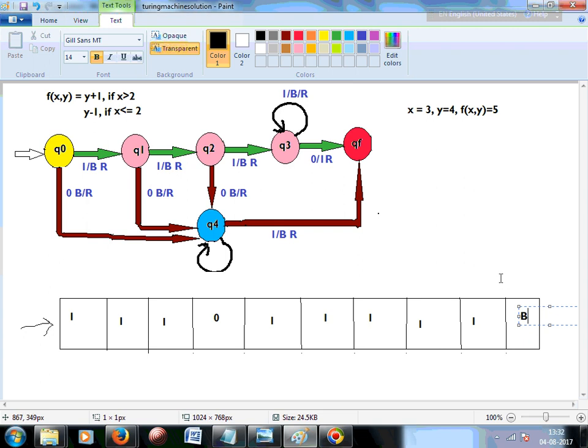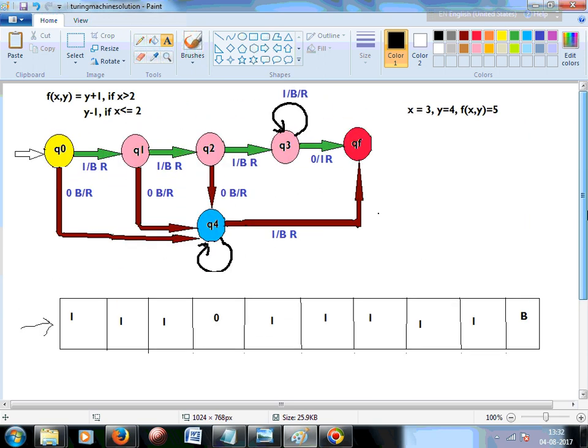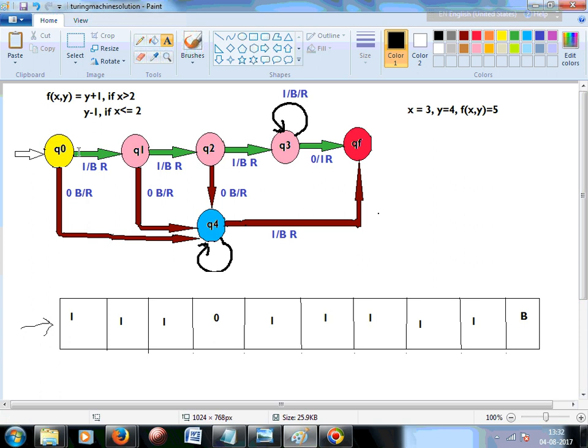So let's say blank is just B. Okay. So this is a situation when x is equal to 3 and y is equal to 4. So how does it work? Initially it is in a q0 state, is it 1? Then we make it blank. So this becomes 0. So let's replace it over here. So just make it blank and move to the right.